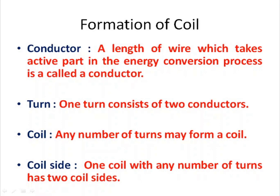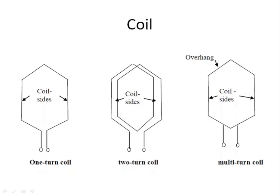One turn consists of two conductors. Any number of turns will form a coil. The two sides of a coil are called coil sides. This is a single turn coil, a two turn coil, and a multi-turn coil.